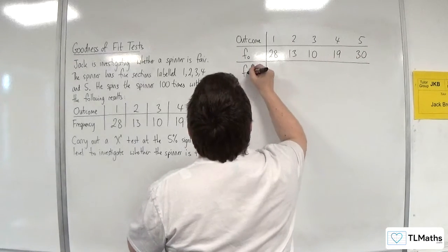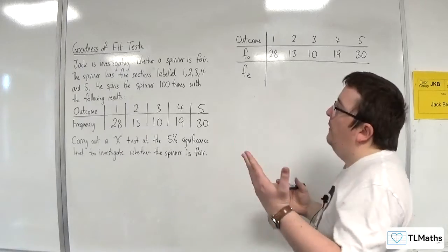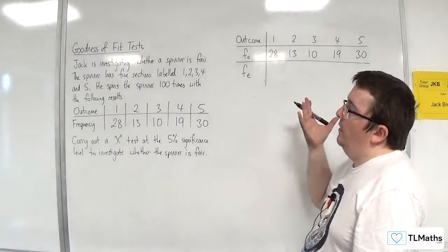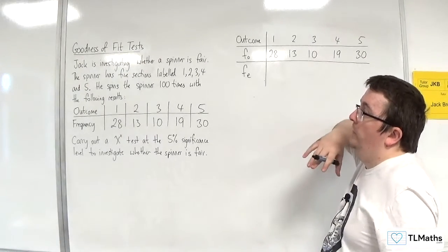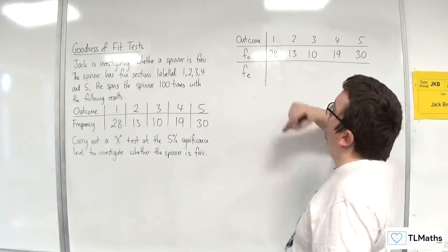The expected frequency, if we're spinning the spinner 100 times and there are five sections, then we would expect each of them to be 20.